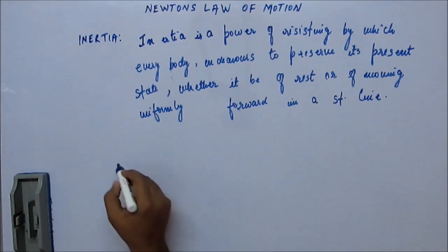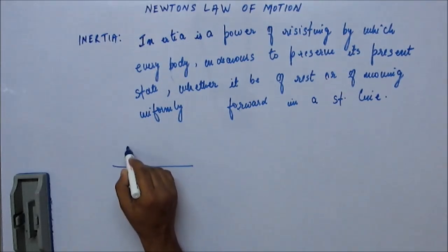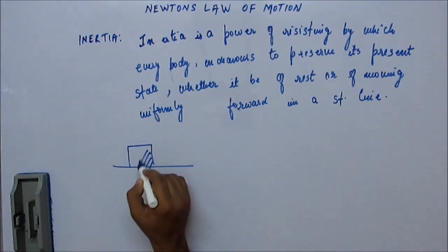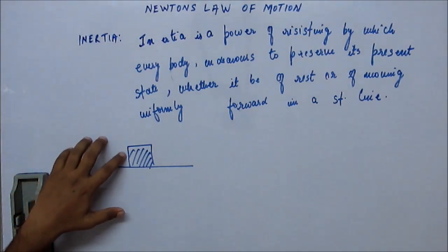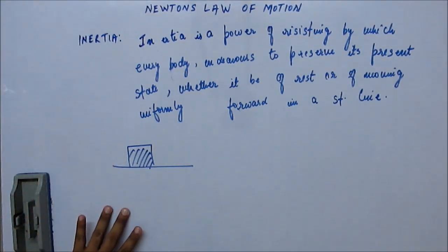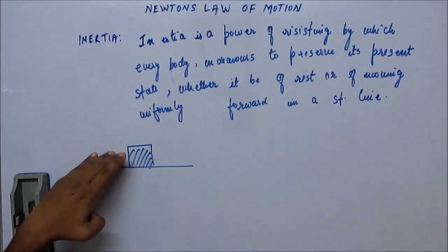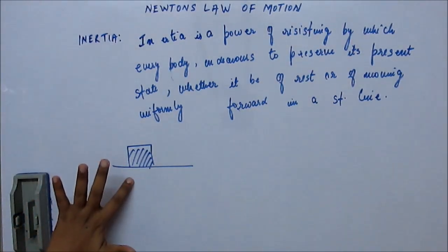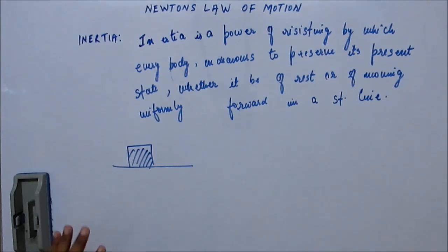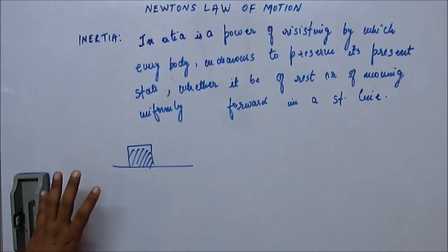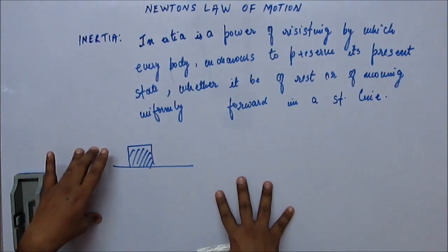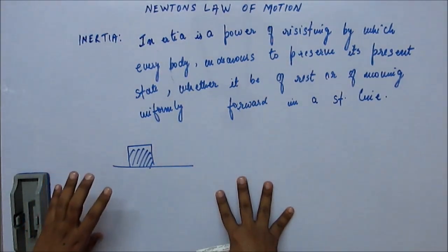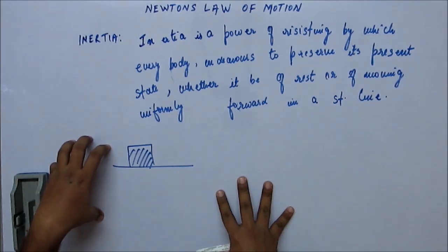Now for example, there is a heavy block kept on a floor. Now, if it is at rest, to make this body come in motion, we have to apply certain force and with that force will come certain resistance from this body for motion. If it is a heavier body, we have to apply more amount of force. If it is a lighter body, we have to apply less amount of force.